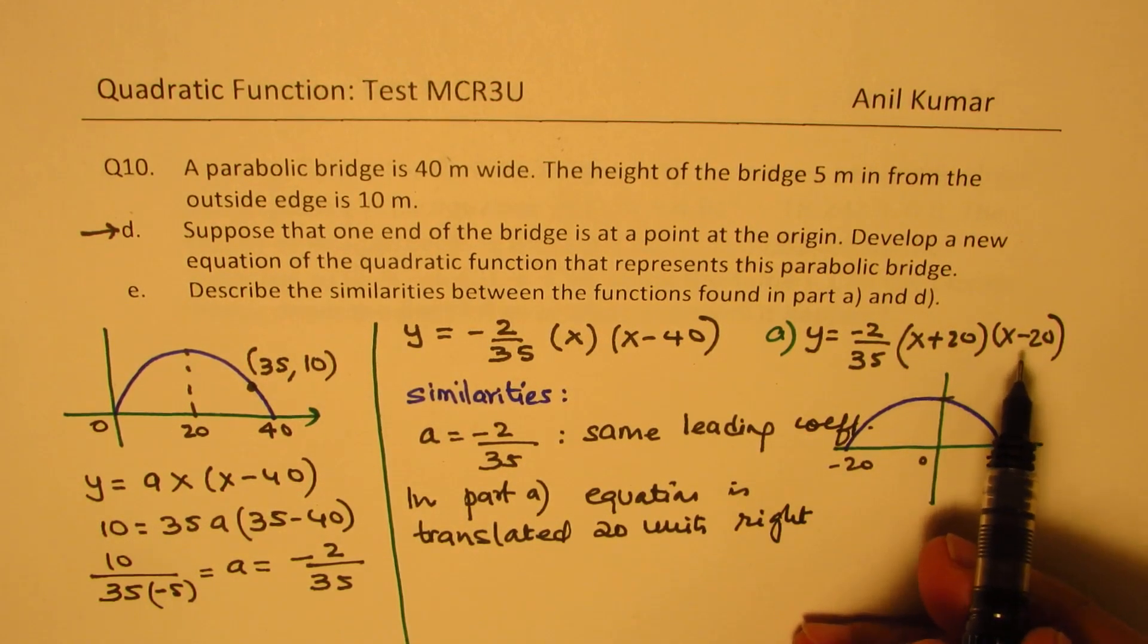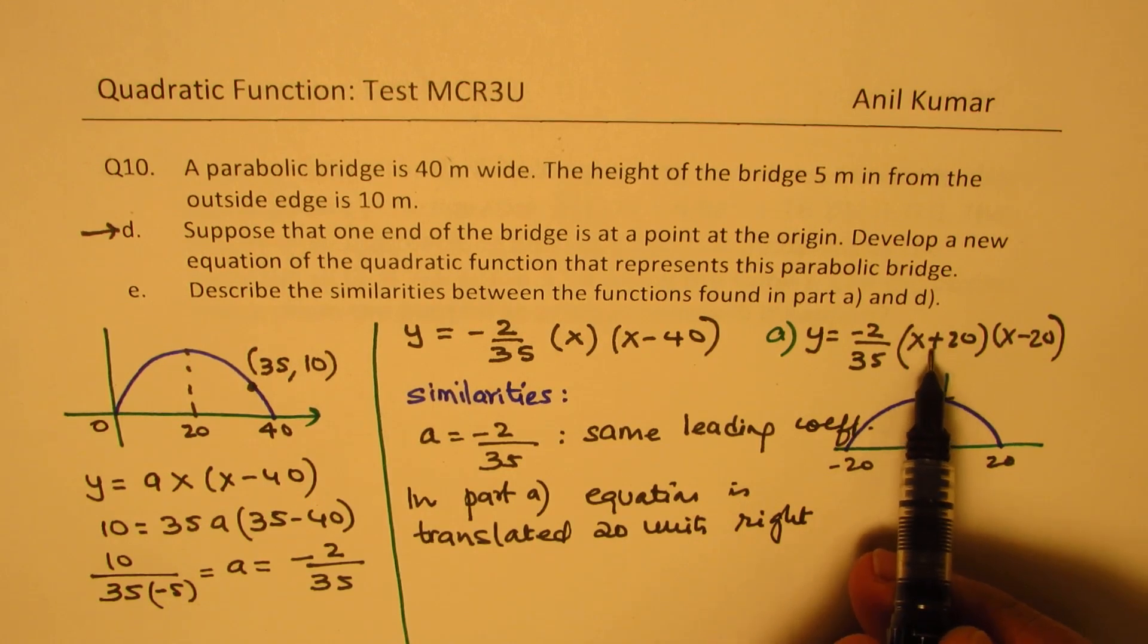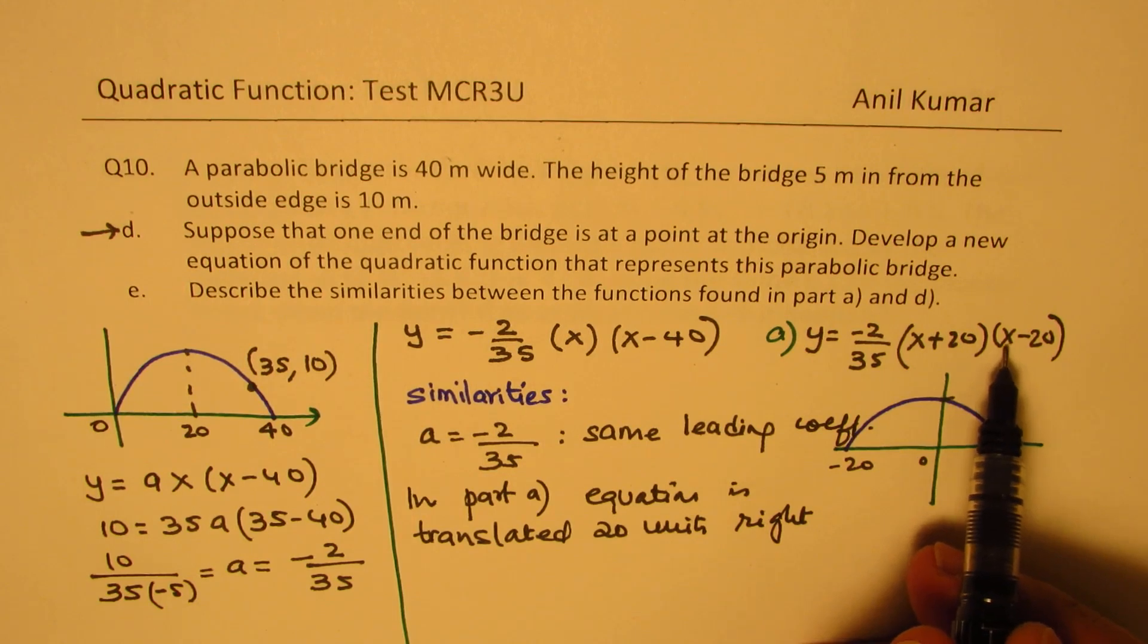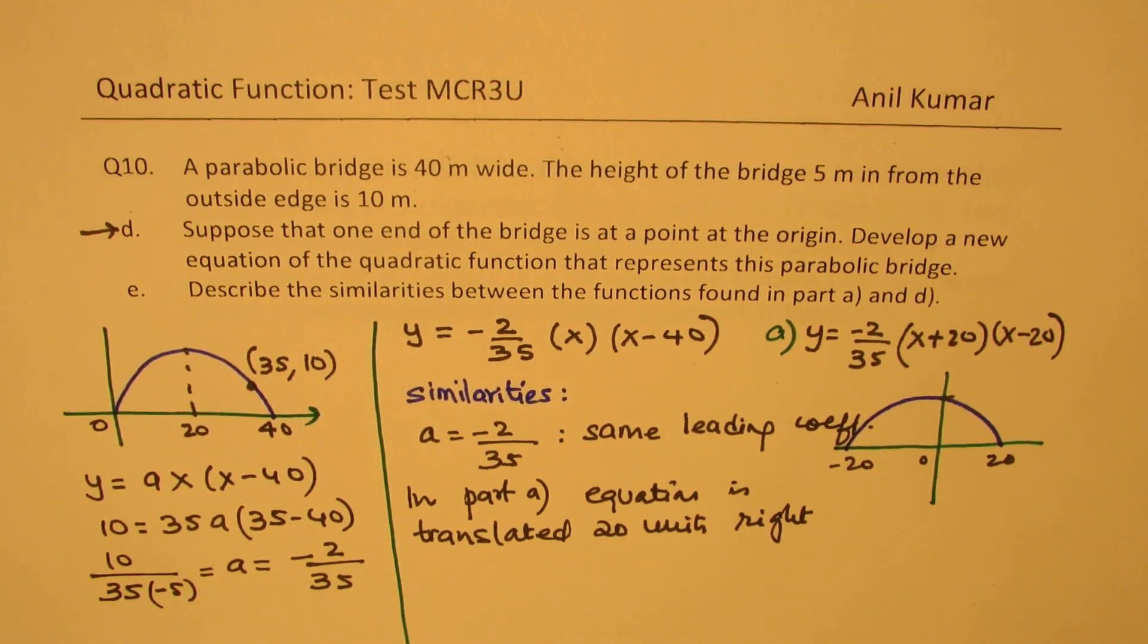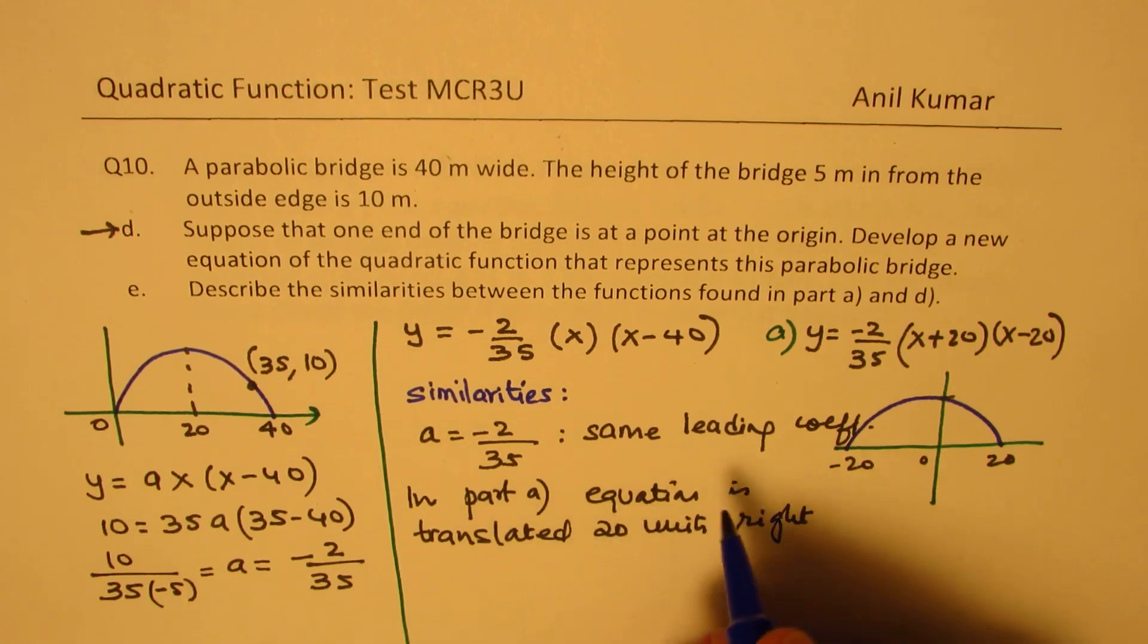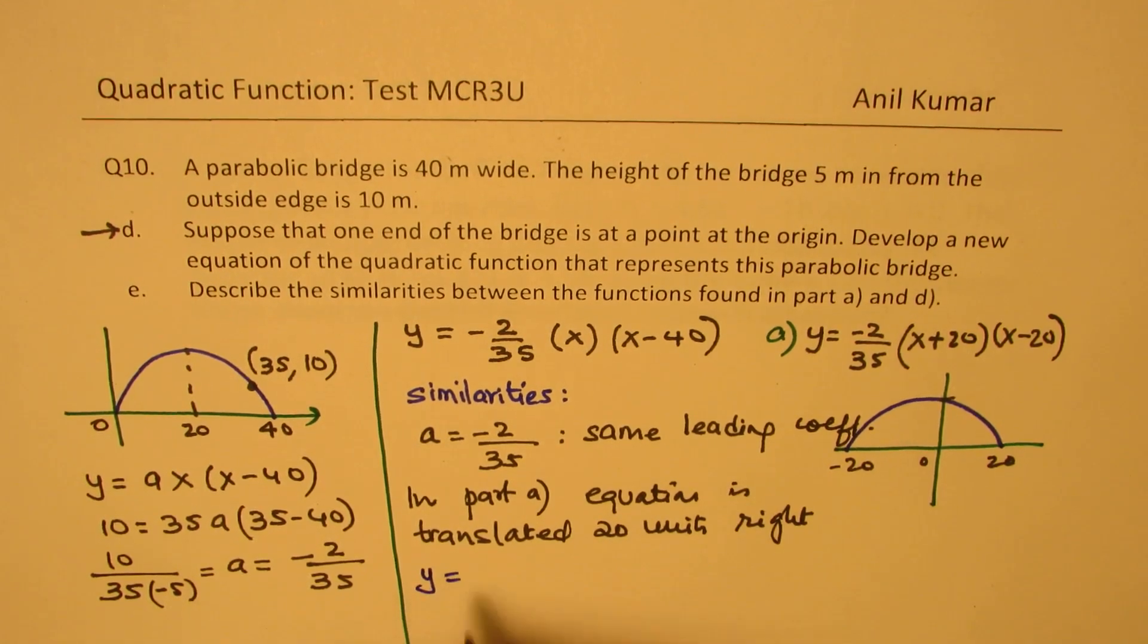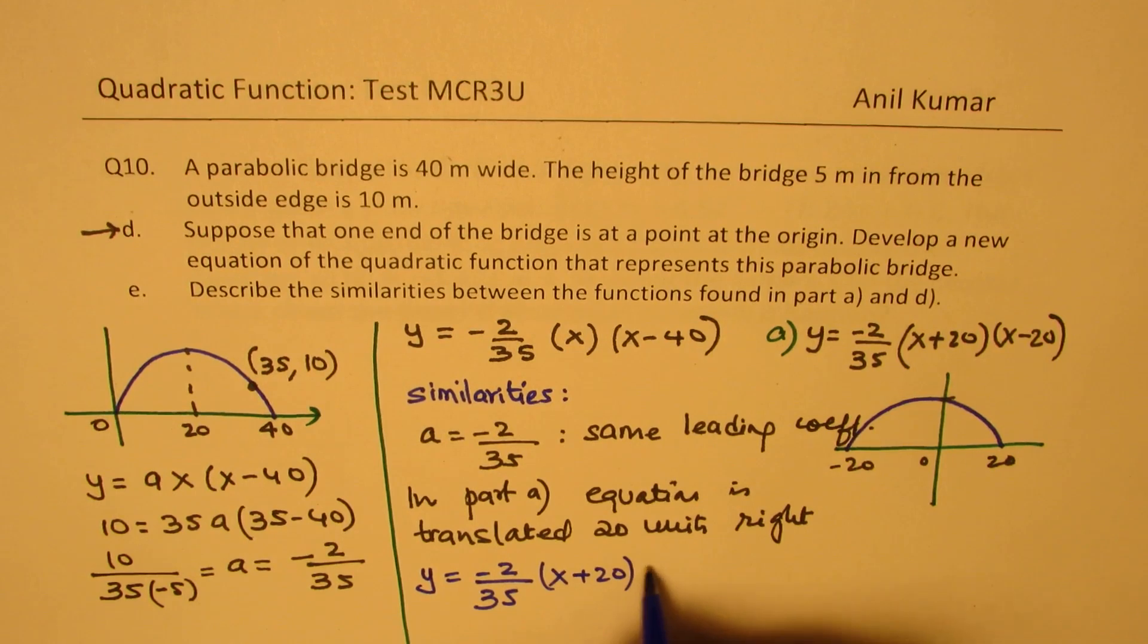So that is what you basically notice. So x plus 20 becomes 0, x plus 0, right? And this becomes x minus 40. You add 20 to both. Do you see that? So it's translated 20 units, right? So that is the kind of similarity which you observe in these equations, right? So it's kind of very important to see that our equation is y equals to minus 2 over 35, and one equation is x plus 20 times x minus 20.